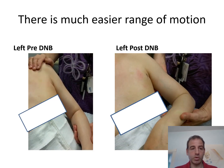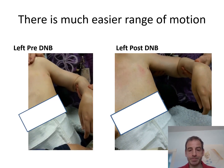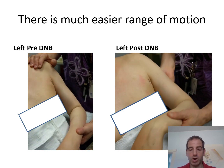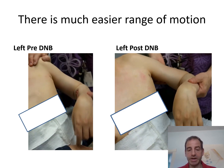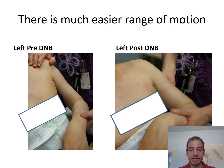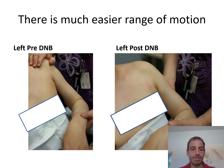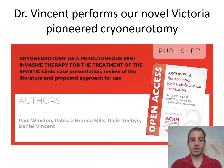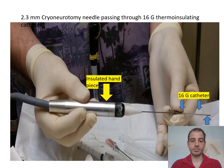This was done bilaterally — he was able to abduct over 90 degrees. We felt he was a good candidate for our novel cryoneurotomy percutaneous procedure. This is a percutaneous cryoprobe which goes through a 16-gauge catheter into the skin.